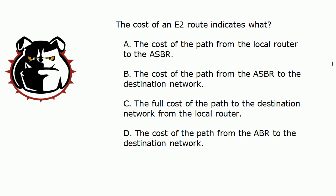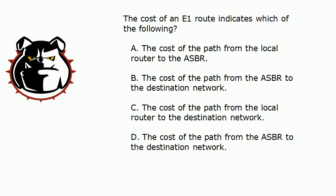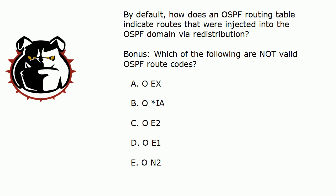Question one: What does the cost of an E2 route indicate? This is an important concept you have to have absolutely straight on exam day. Question two: What does the cost of an E1 route indicate? Question three: By default, how does an OSPF routing table indicate routes that were injected into the domain via redistribution? And here's a bonus question: Which of these are not valid OSPF route codes?